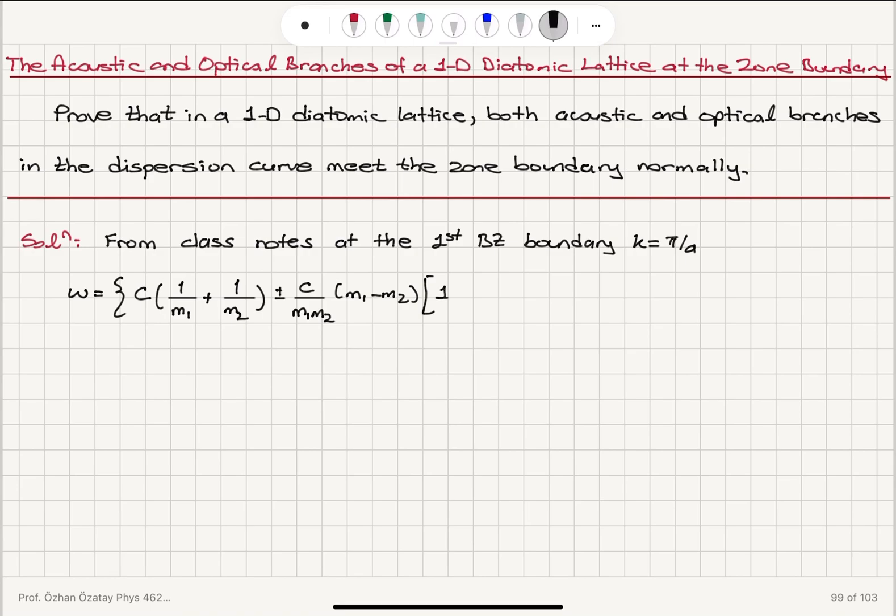Times the square root of [1 plus m₁m₂(ka - π)² divided by 2(m₁ - m₂)²].